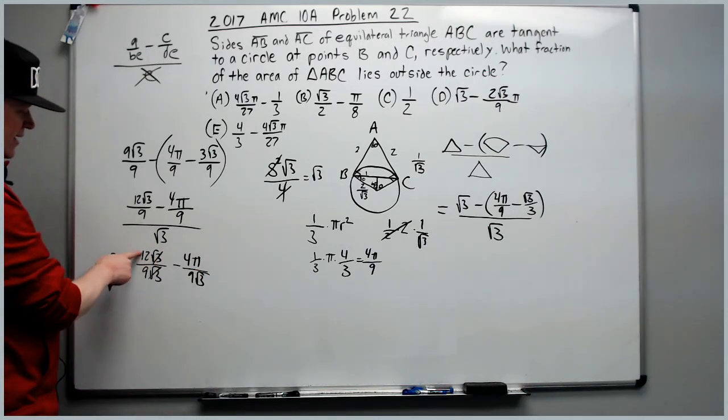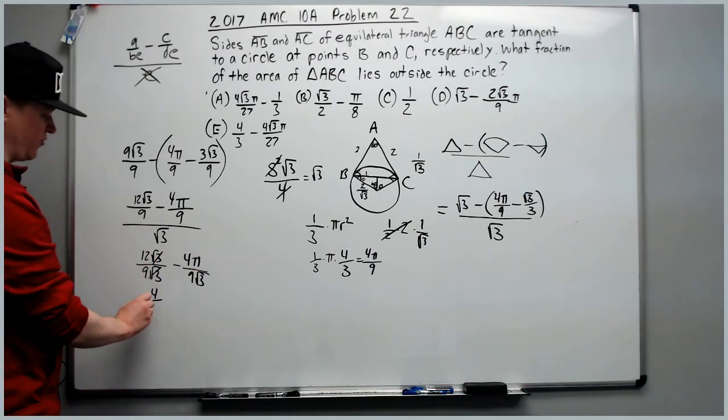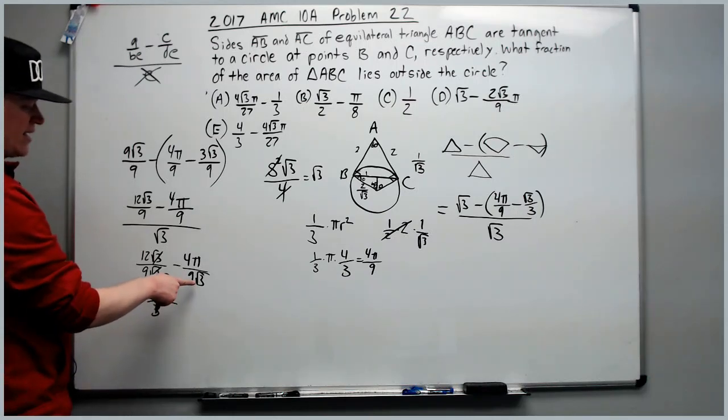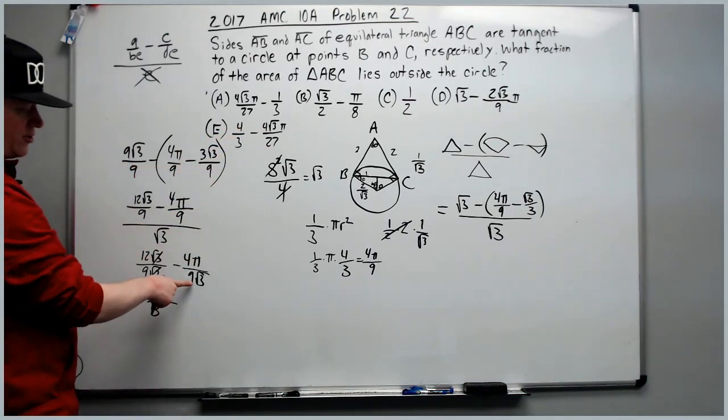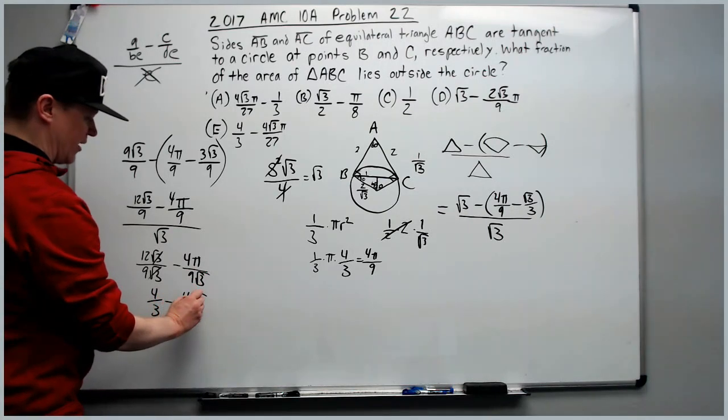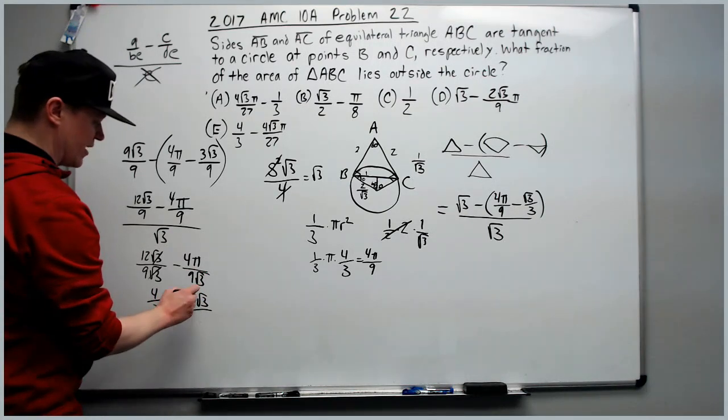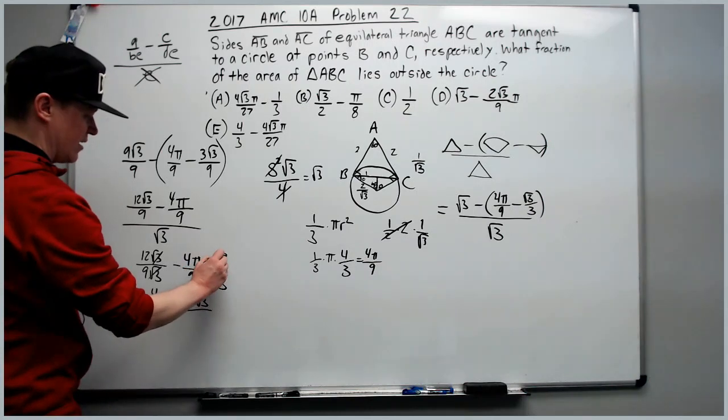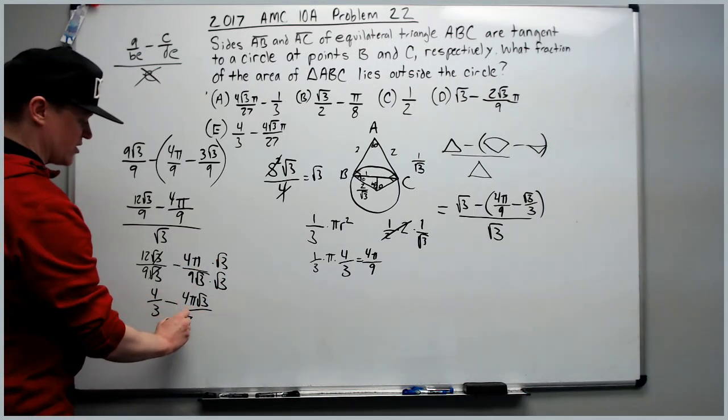Next up, the root 3 is canceled. The 12 over 9 is 4 thirds minus. There's no answers that have root 3 in the denominator, so we will rationalize to get 4 pi root 3 over 9 times 3, which is 27.